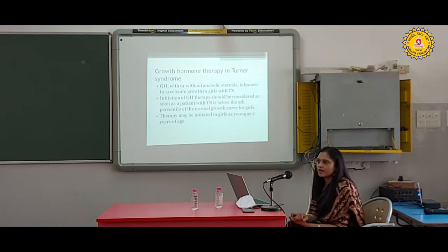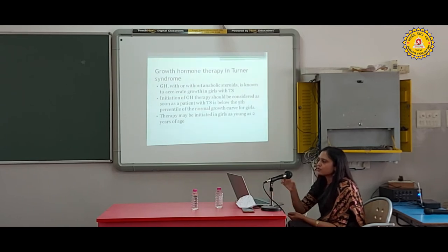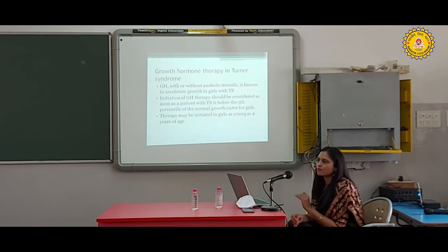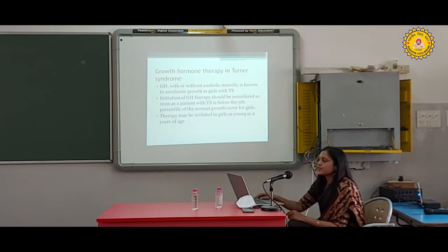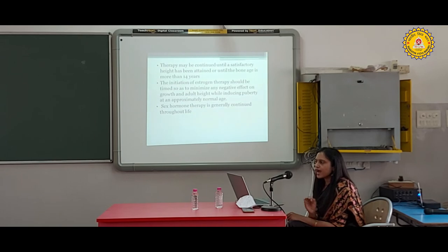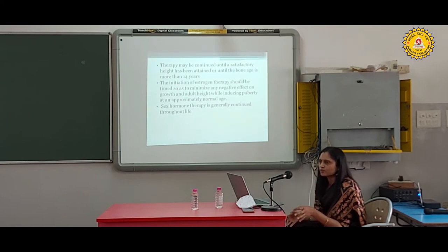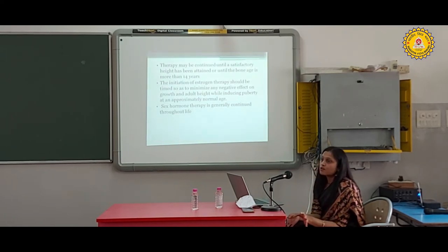Growth hormone therapy in Turner syndrome: Growth hormone with or without anabolic steroids accelerates growth in girls with Turner syndrome. Initiation should be considered as soon as the patient is below the 5th percentile of normal growth curve. It can be initiated as early as 2 years of age and continued until satisfactory height is attained or bone age exceeds 14 years. After 14 years, bones are fused and growth hormone won't work. Early identification and early therapy initiation are critical.